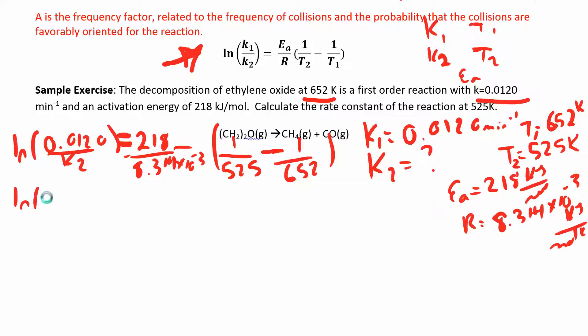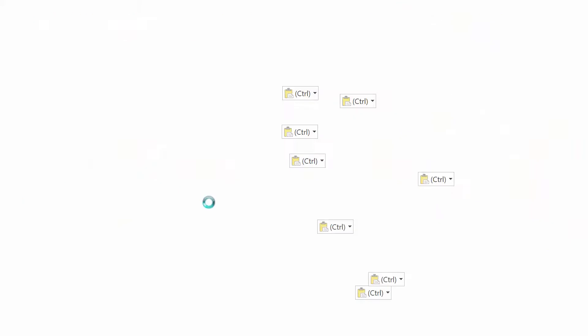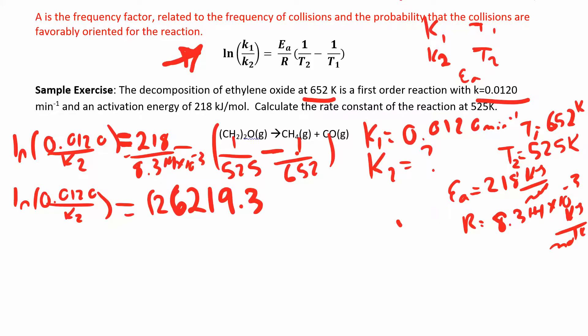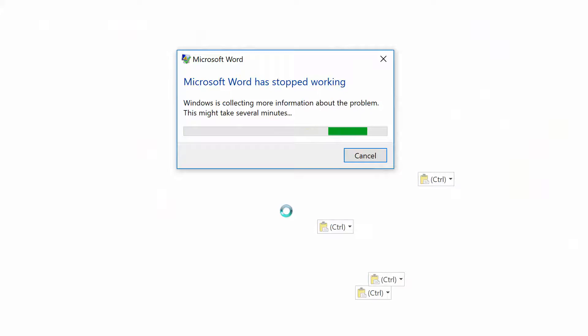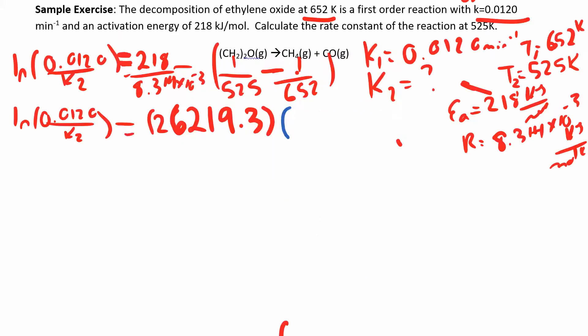I have natural log of 0.012. Let's clean this other side up a little bit. 218 divided by 8.314, that's 26219.3. And on the other side, 1 over 525 minus 1 over 652 is 0.00371.